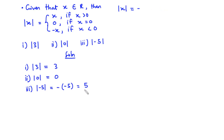From this we can make a conclusion: the absolute value of a positive number is still a positive number, the absolute value of zero is equal to zero, and the absolute value of a negative number is still positive. Notice that the absolute value of any real number can never be negative. We can also define the absolute value as the non-zero distance measured from a real number to its origin.